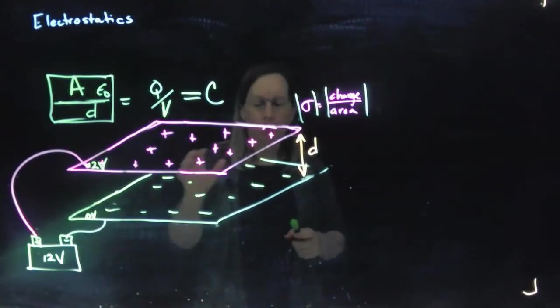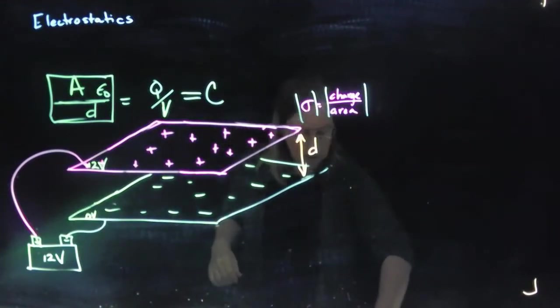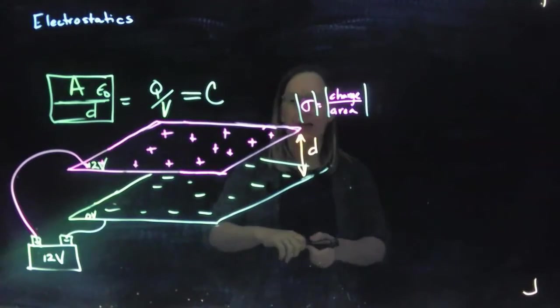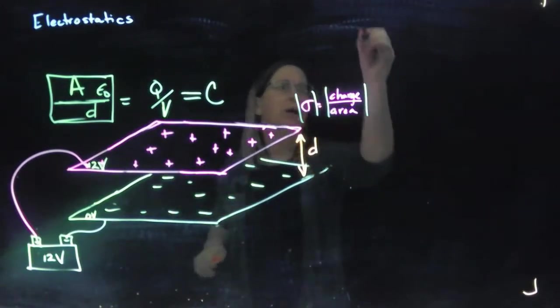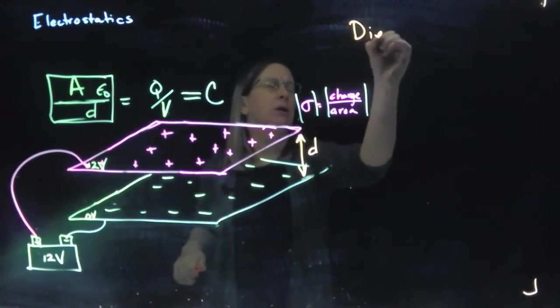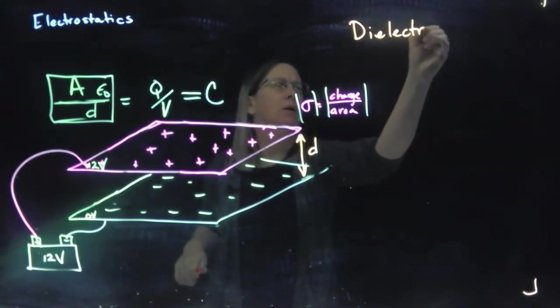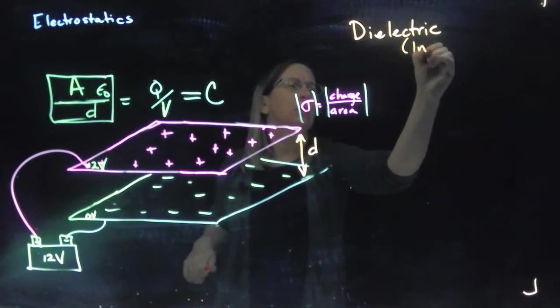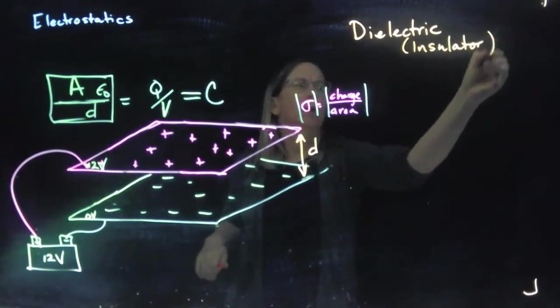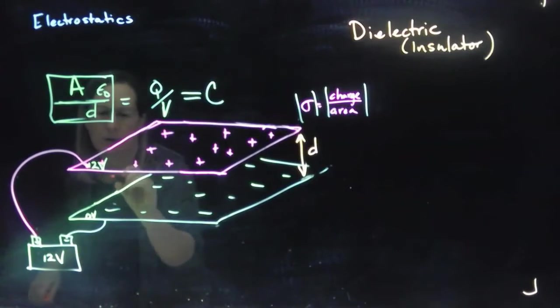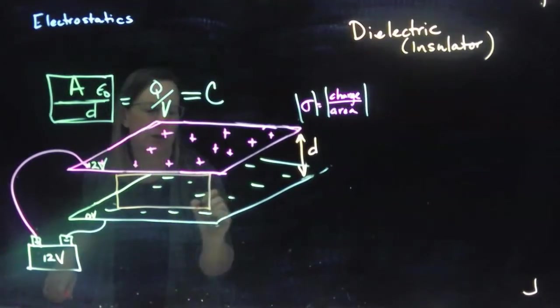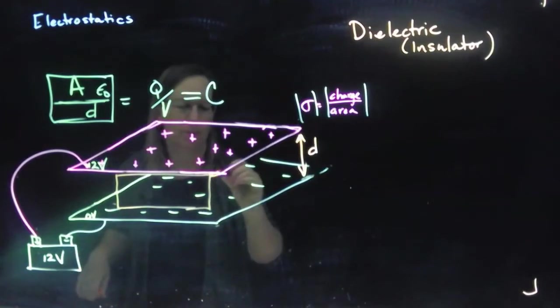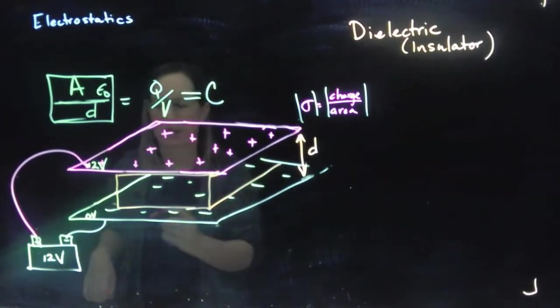12 volts, but we can do something else. We can put a material, an insulator, in between these two plates. So we can put in what's called a dielectric. An insulator, and when we put this insulator in, so I'm going to put it sort of right here for right now, I'm not completely filling it, but we'll say it's like that.